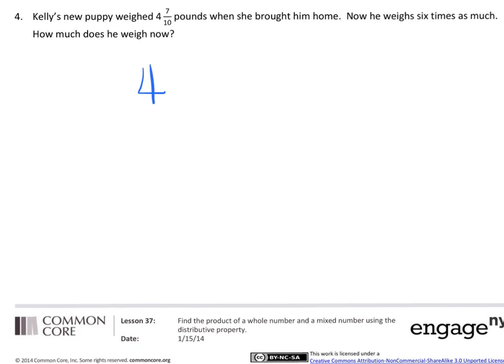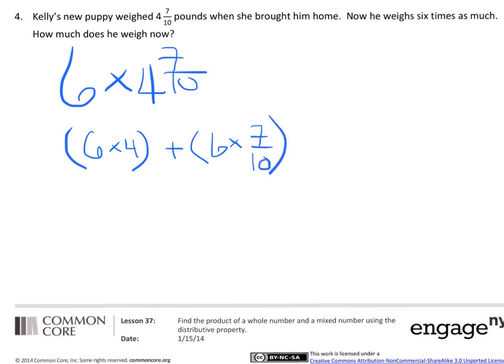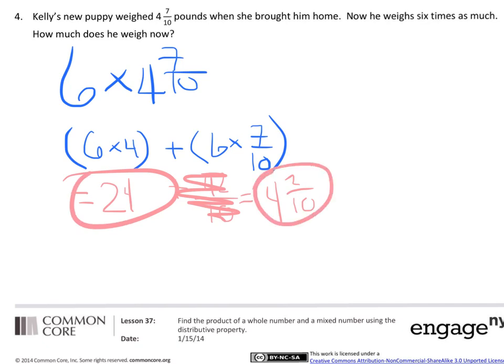So he was four and seven tenths, but now he's six times that, six sets of that. So let's use distributive property. Let's multiply the six times the four, and let's multiply the six times the seven tenths. We're sharing the work. We're distributing it. Six times four is twenty-four, and six times seven tenths is forty-two tenths, which is very improper. So we'll divide forty-two divided by ten and get four and two tenths left over, which could be one fifth, right? So now my total is these two to find the total weight of this dog, which is twenty-eight pounds and two tenths. So twenty-eight and two tenths pounds. All right.